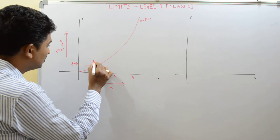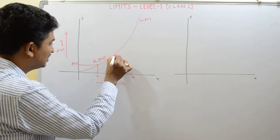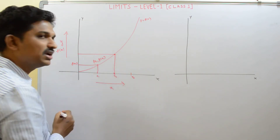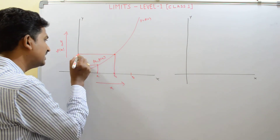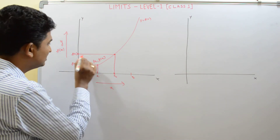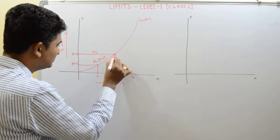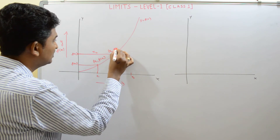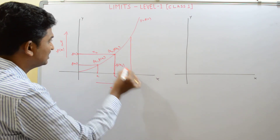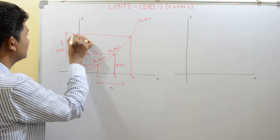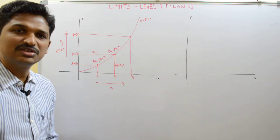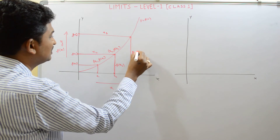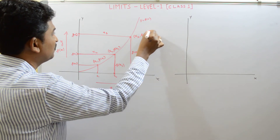For x2, the y-coordinate (functional value) is F of x2, so the point is (x2, F of x2). Similarly, for x3, substituting it in the function gives F of x3, and the point is (x3, F of x3). This shows how for each x value on the x-axis, there is a corresponding functional value on the y-axis.